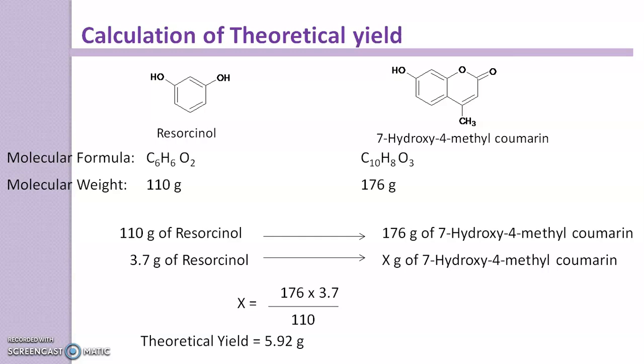The value comes which is your theoretical yield, so theoretical yield gives 5.92 gram. This indicates when we have taken 3.7 gram of resorcinol, it gives 5.92 gram of 7-Hydroxy-4-Methyl-Coumarin. Now we have the practical yield and theoretical yield.